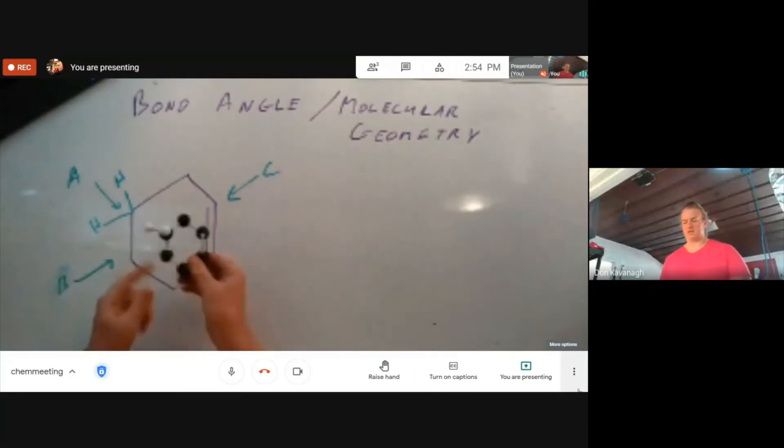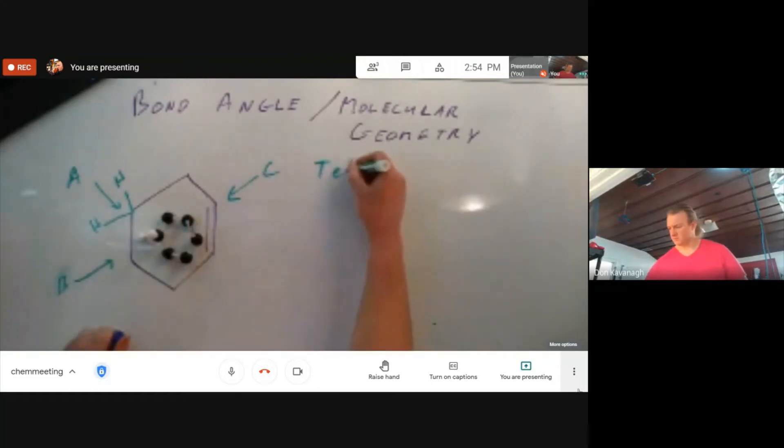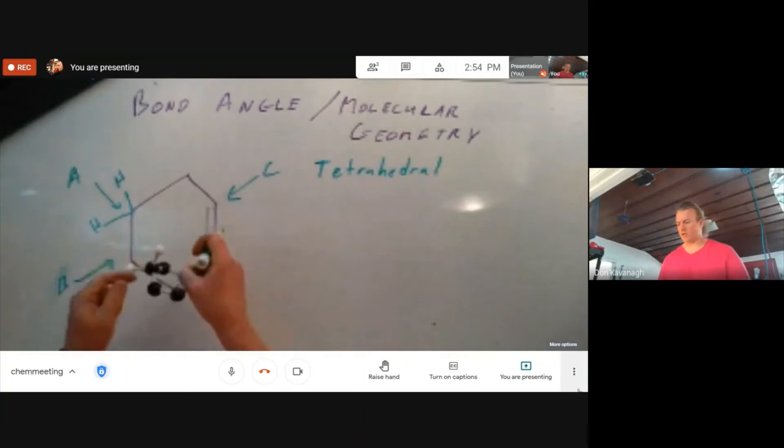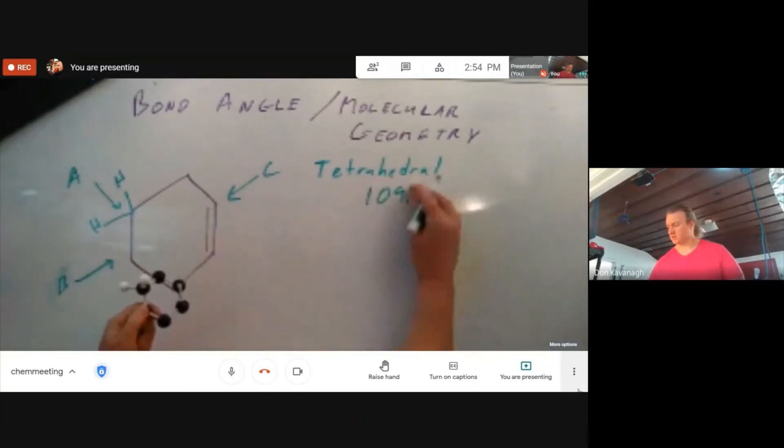Now this carbon is bonded four times, and every single bond is a sigma bond. The molecular geometry of this atom is tetrahedral. Each bond angle is approximately 109 degrees.